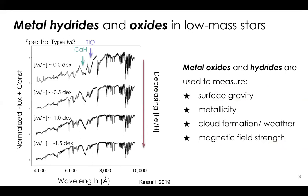I did my PhD research on low-mass stars, and this conference is great for getting people interested in changing fields. From metal oxides and hydrides in low-mass stars we've learned you can probe lots of really cool parameters: surface gravity, metallicity, cloud formation, cloud dispersion, and weather in brown dwarfs. Magnetic field strengths are often measured by calculating Zeeman broadening in metal hydride and oxide bands.